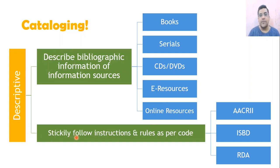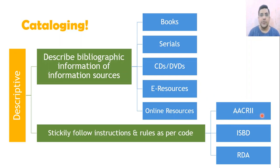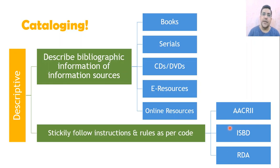Descriptive cataloging strictly follows instructions and rules as per codes. The famous codes we have are AACR2 and ISBD. AACR2 is the Anglo-American Cataloging Rules, revised version two. ISBD is International Standard Bibliographic Description. Then AACR2 was replaced by RDA — Resource Description and Access — which is essentially AACR3.